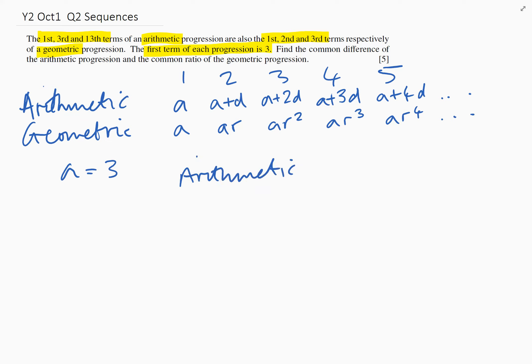So we don't really need to worry about the first terms because we already know those are three. Term three for the arithmetic is going to be a plus 2d, as we can see above. But since we know that a is three, you might as well write it down.